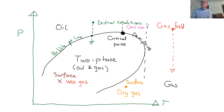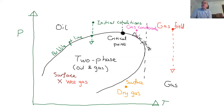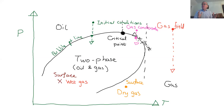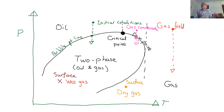There's one last case: the gas condensate. Imagine the initial conditions are in the gas region but the critical point is to the left. As I drop the pressure, I hit the dew point. You start producing droplets of a denser phase — those droplets sink, confirming it's oil. So the surrounding fluid is gas by definition. This is a gas condensate: in the reservoir, as pressure drops, oil condenses out.